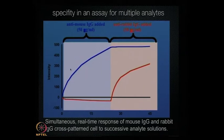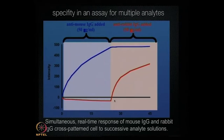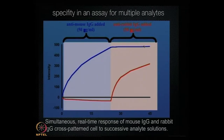To show specificity, here's our example. We have mouse IgG on one analyte and rabbit IgG on the other. When we introduce anti-mouse IgG, you can see the increase in signal in one of the spots but not the other — the red versus the blue. Then we introduce anti-rabbit IgG, in which case the second spot increased but the first one remained constant. This demonstrates the specificity of the assay — anti-mouse binds only the mouse IgG feature, and anti-rabbit binds only the rabbit IgG feature. That's correct.